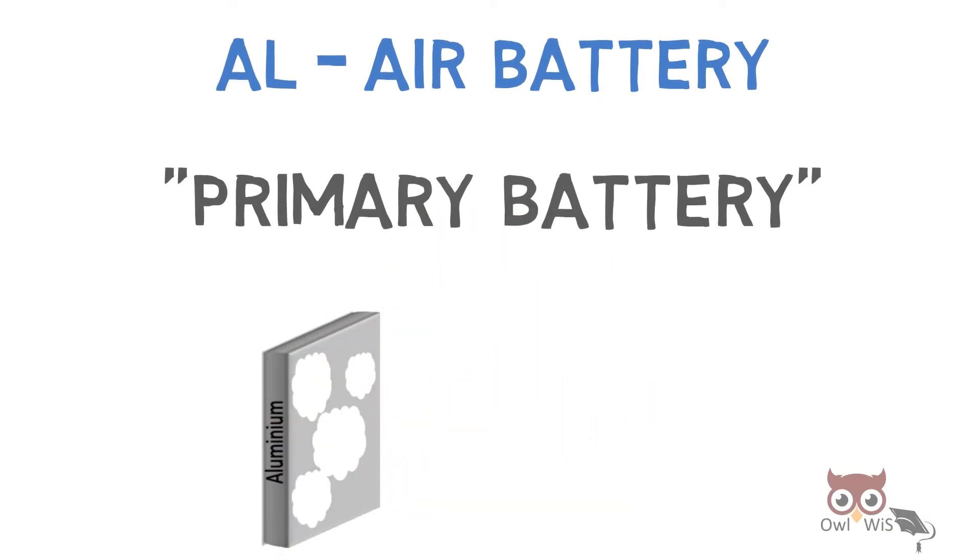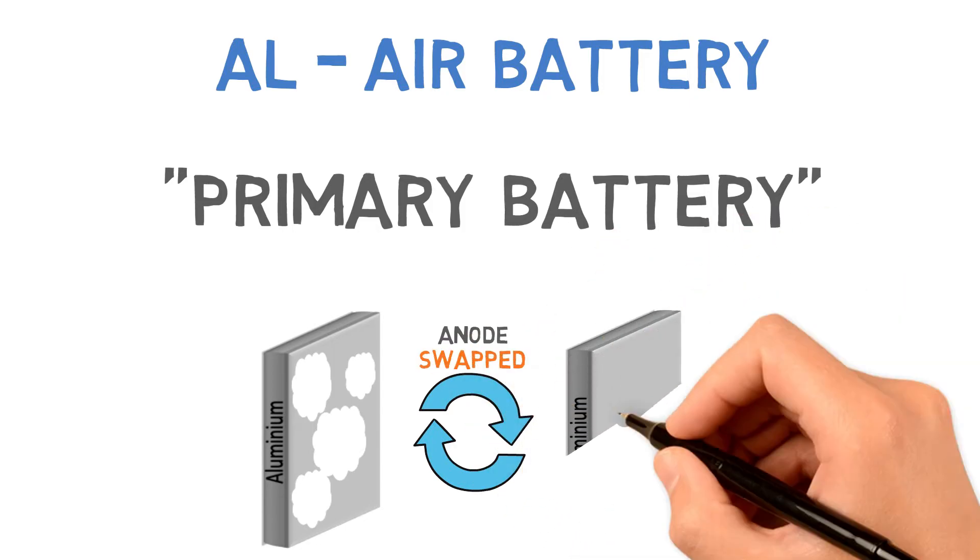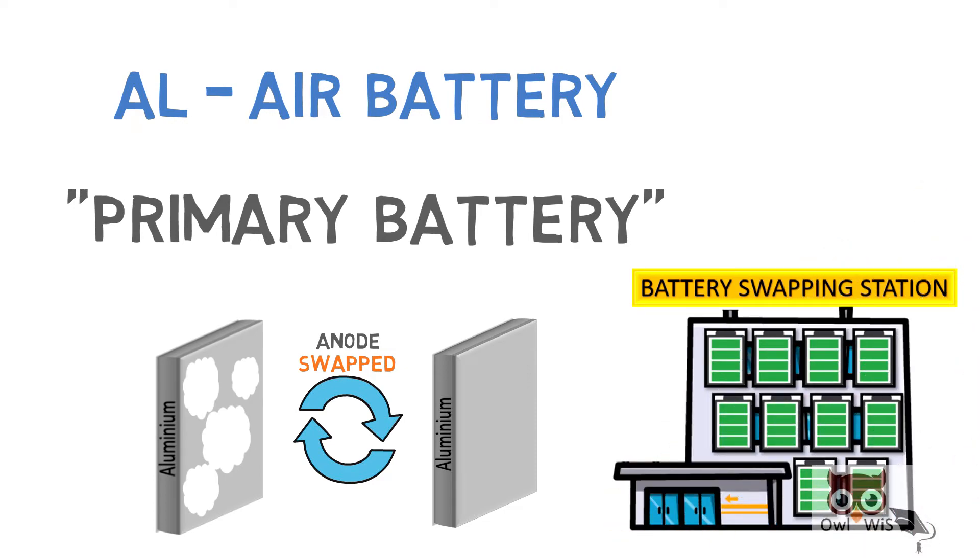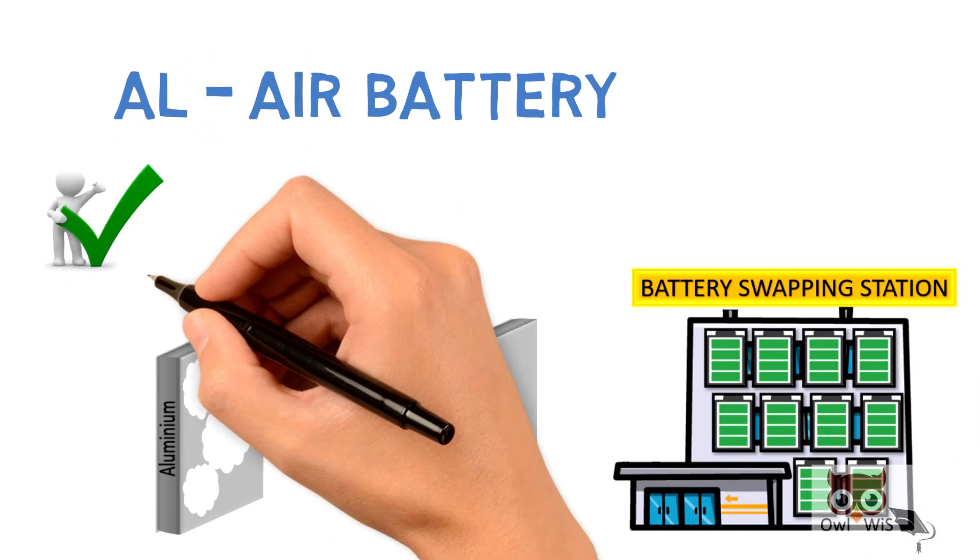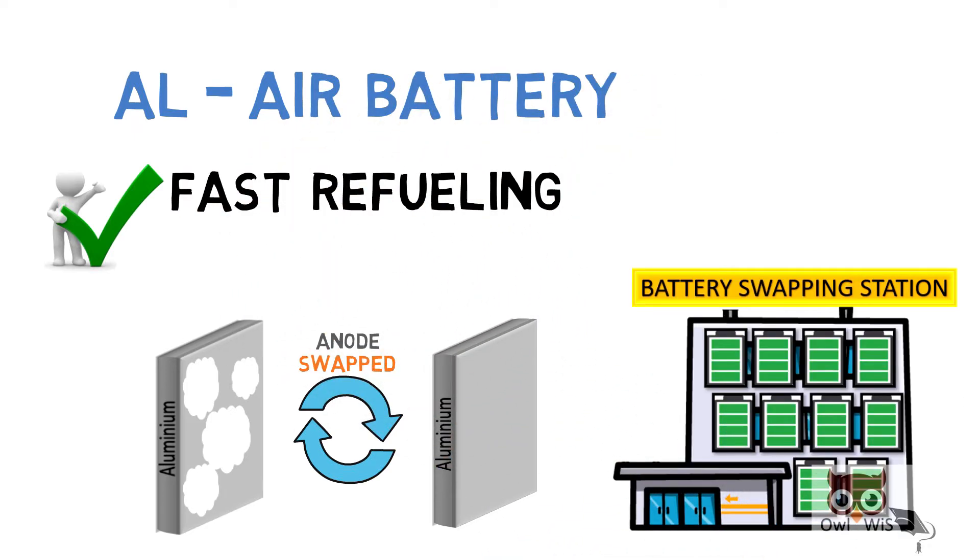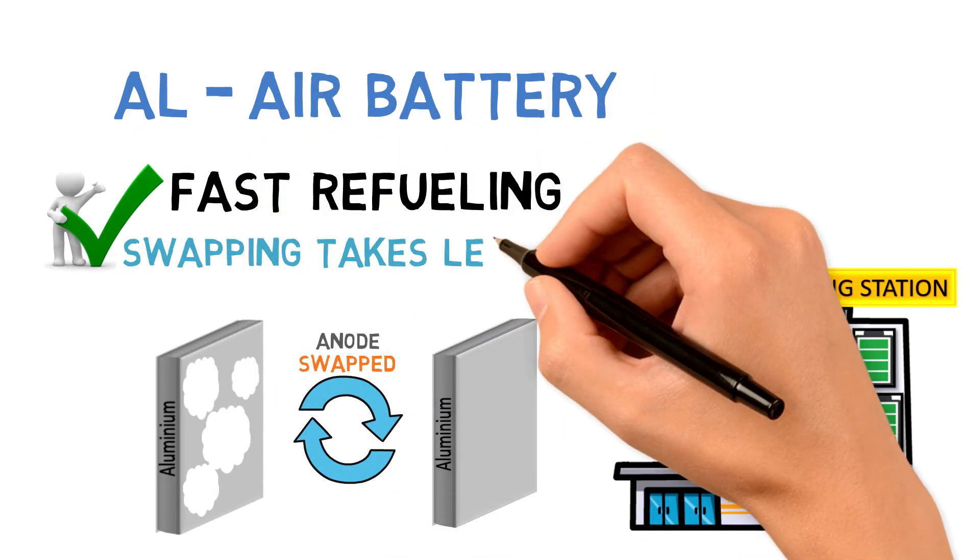So what is done is, once the Aluminium anode is eroded, it is swapped with a new one at a battery swapping station. The advantage is that it is fast refueling as swapping takes less time.